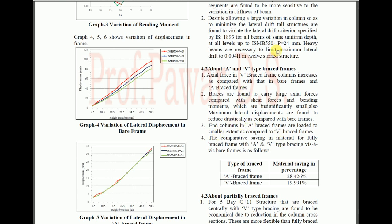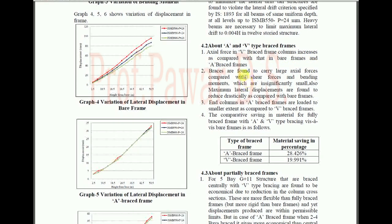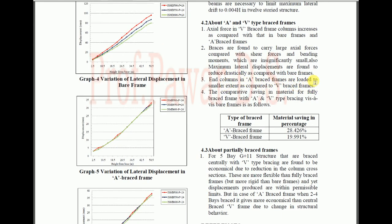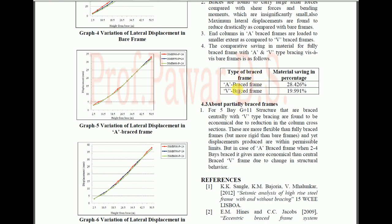For A-type and V-type braced frames: axial forces in V-braced frame columns increase compared to bare frames; braces in A-braced frames carry large axial forces compared to shear forces and bending moments, which are insignificantly small. Maximum displacements are drastically reduced compared to bare frames. End columns in A-braced frames are loaded to a smaller extent compared to V-braced frames. Material savings for fully braced frames with A and V bracing compared to bare frames are 28.4% to 6% for A-bracing and about 20% for V-bracing.